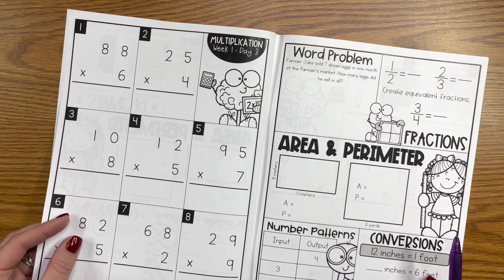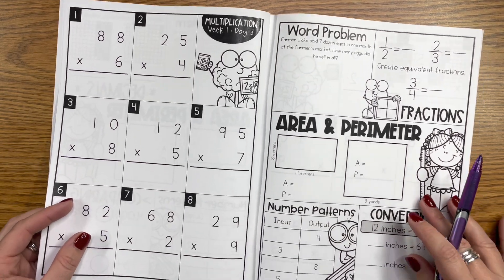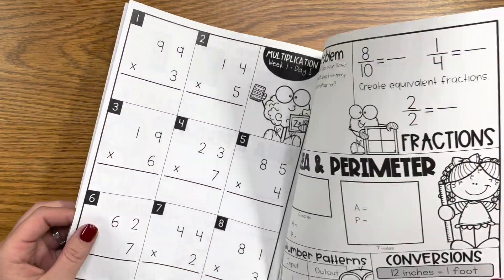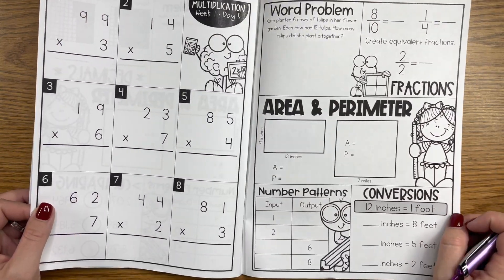So day three is going to look exactly the same, only obviously different word problems, different fractions, different number patterns, that kind of thing. And the same for day five.